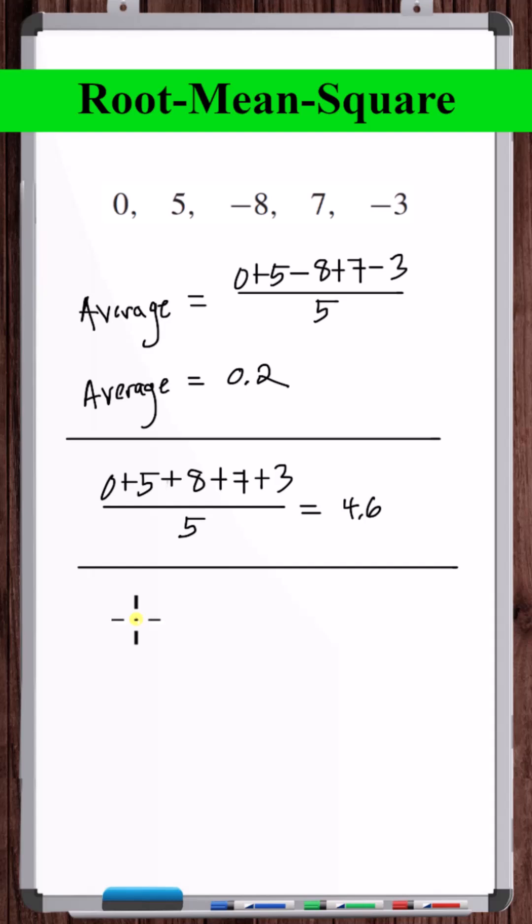However, instead, what statisticians use is something called the root mean square, abbreviated RMS.